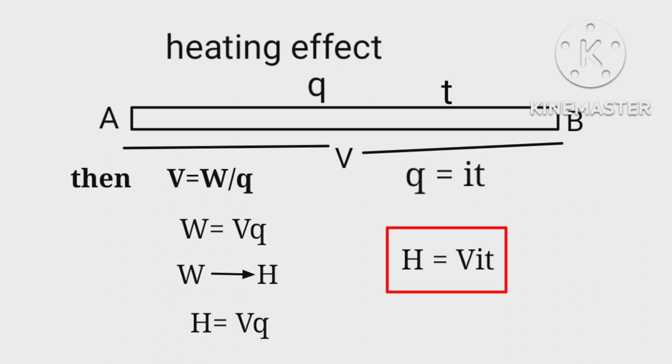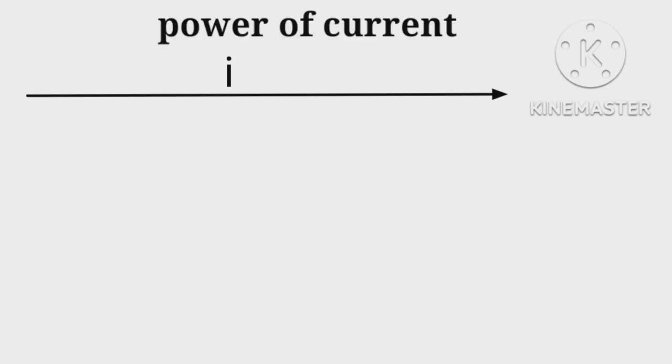When a current is allowed to pass through a resistor for a time t, a kind of work W is done.